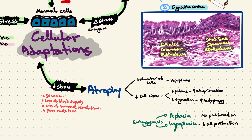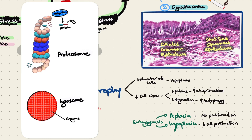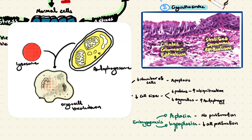How exactly do our cells undergo atrophy? First, we have apoptosis — programmed cell death — which leads to a reduction in the number of cells. Next, we need to reduce the cell size by reducing the number of proteins and organelles. Proteins are degraded via the ubiquitin pathway, where proteins are tagged by ubiquitin for degradation, and proteasomes and lysosomes then degrade these tagged proteins. To reduce the number of organelles, the body produces autophagosomes around organelles, which fuse with lysosomes to break them down — a process known as autophagy, meaning self-eating.